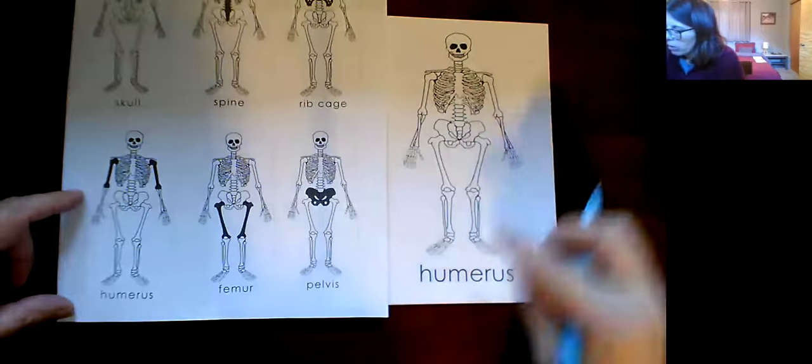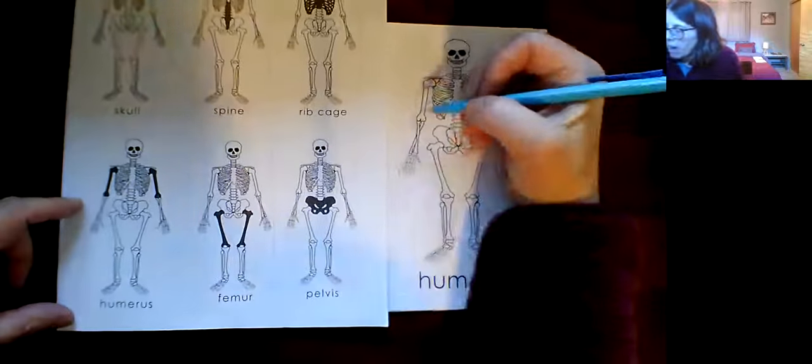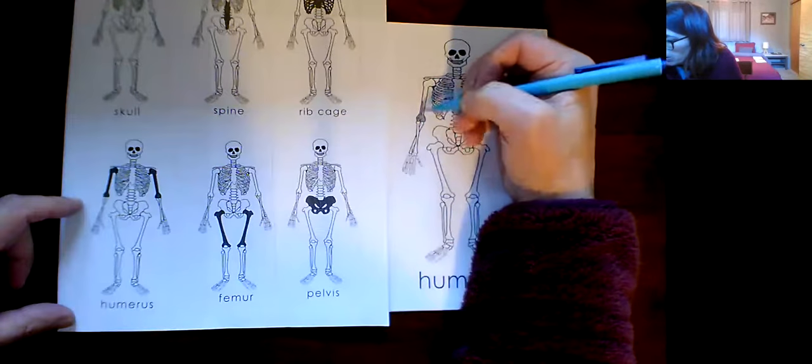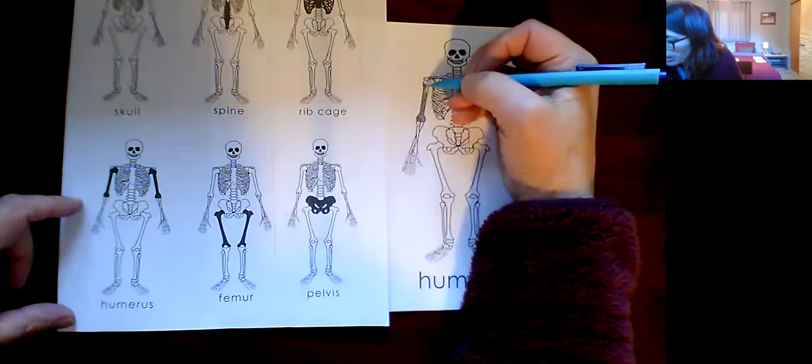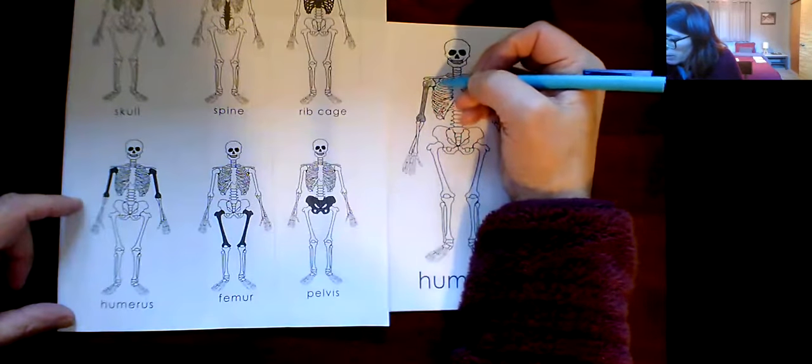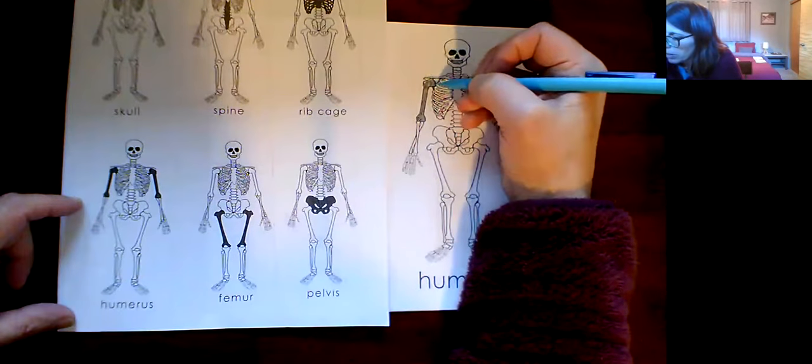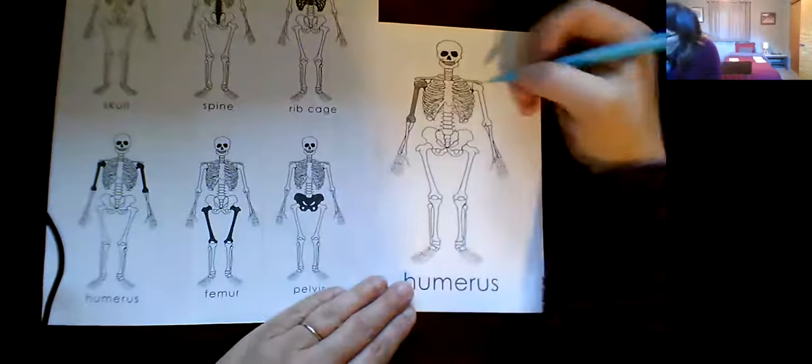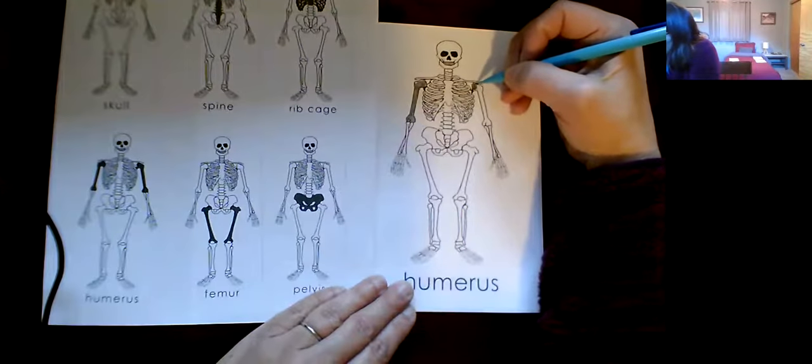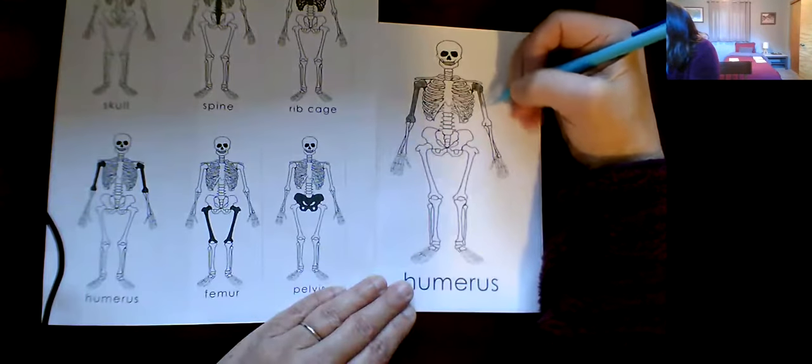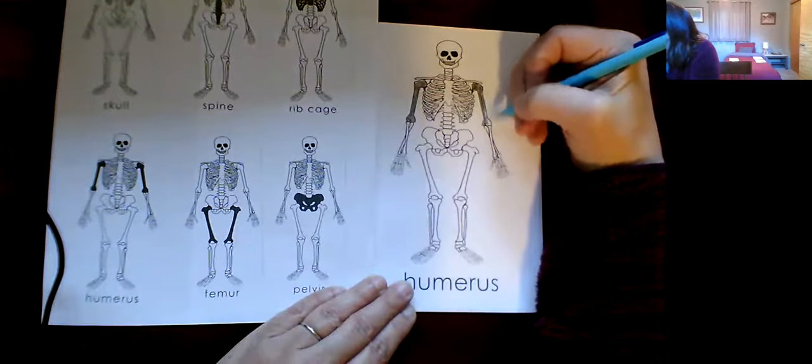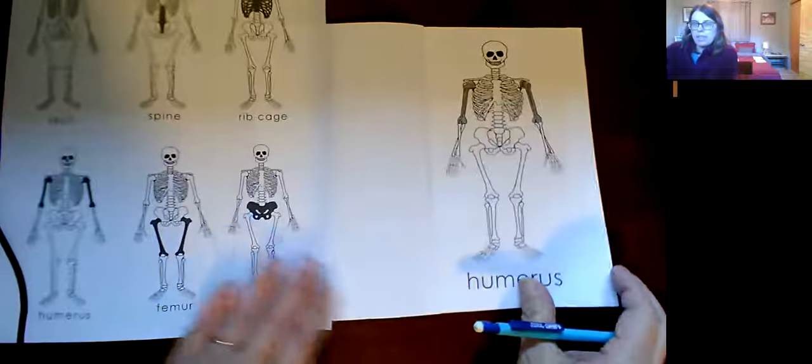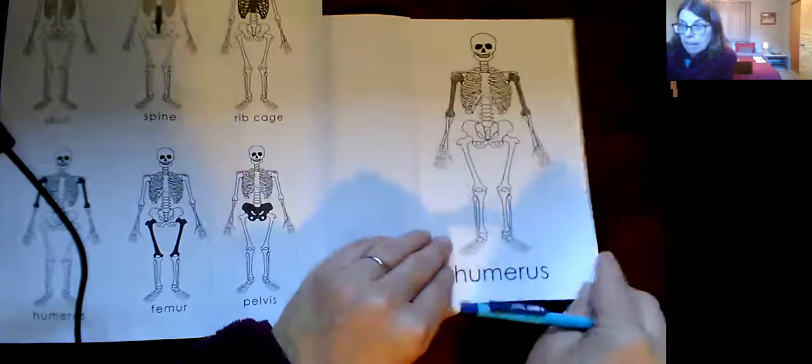So, then you want to come back over to this one and color it in. Now, I'm using a regular pencil, but you can use a colored pencil if you like to. That would be nice, but I used this one in case I needed to erase. You make a choice of what you'd like to use. You could even use a crayon if you have a crayon that's pointy enough. So, then you want to color in your humerus on both sides of your skeleton. So, that's the first page.